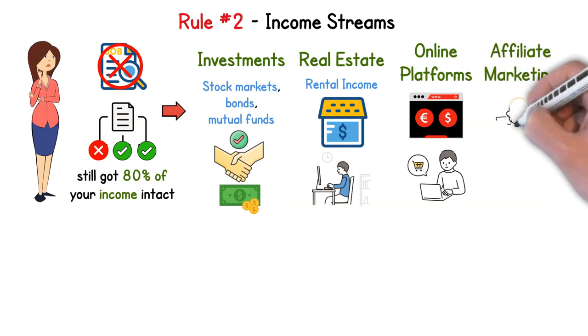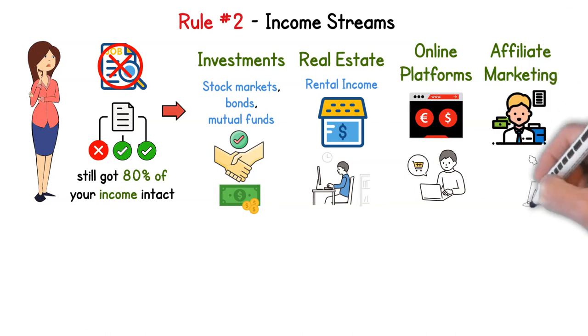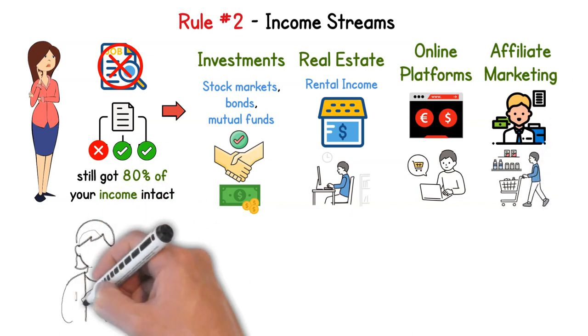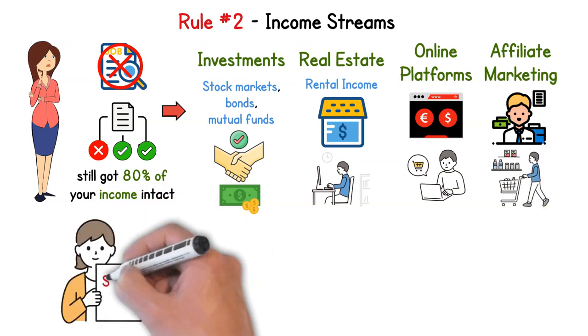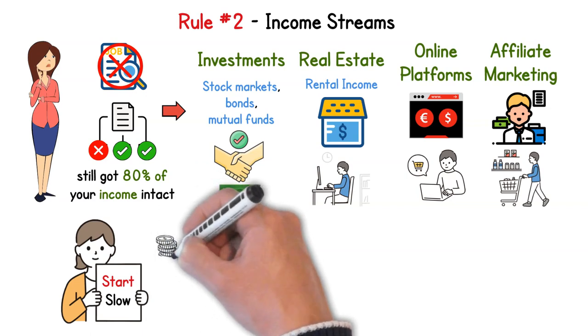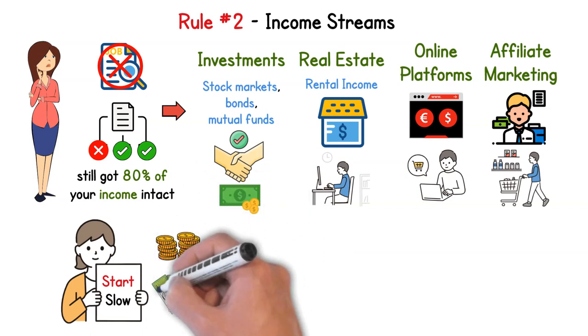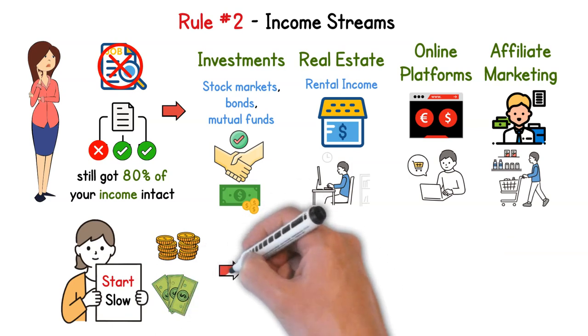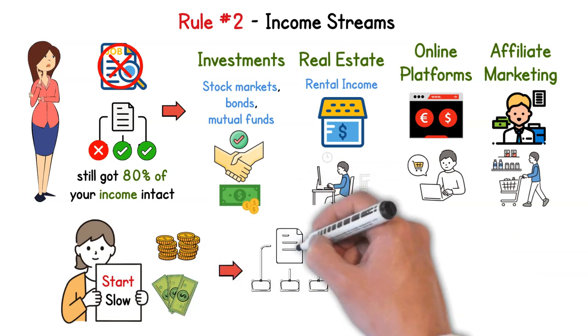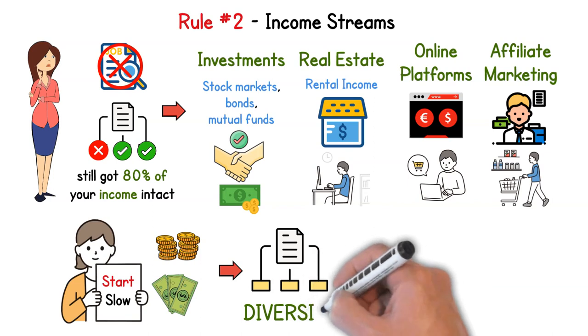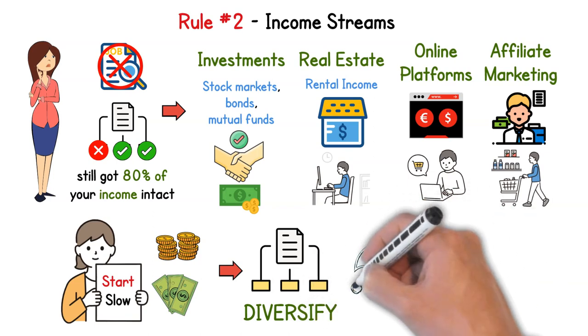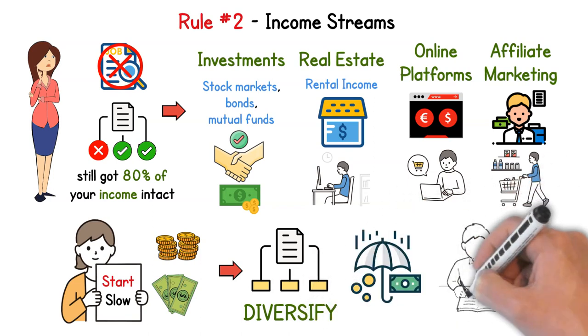Affiliate marketing: it's like recommending your favorite restaurant to a friend but getting paid for it. Platforms like Amazon Associates have made this accessible to all. But here's the thing, don't just jump in blind. Start slow, maybe with a side hustle or a small investment. And as you get more comfortable, expand your horizons. Don't forget to diversify, diversify, diversify. Not only will you cushion yourself from unforeseen financial shocks, but you might also discover new passions along the way.